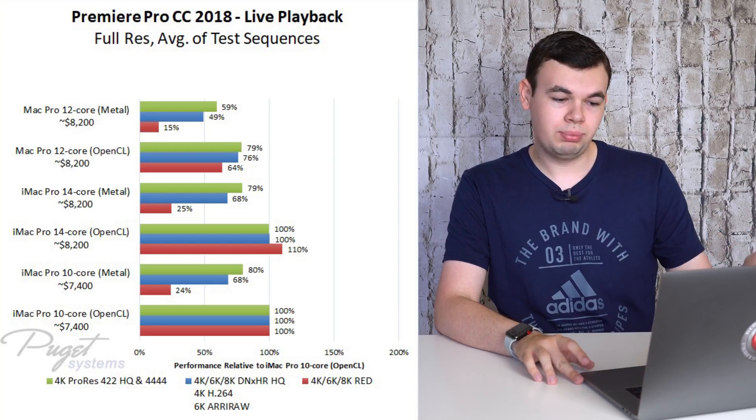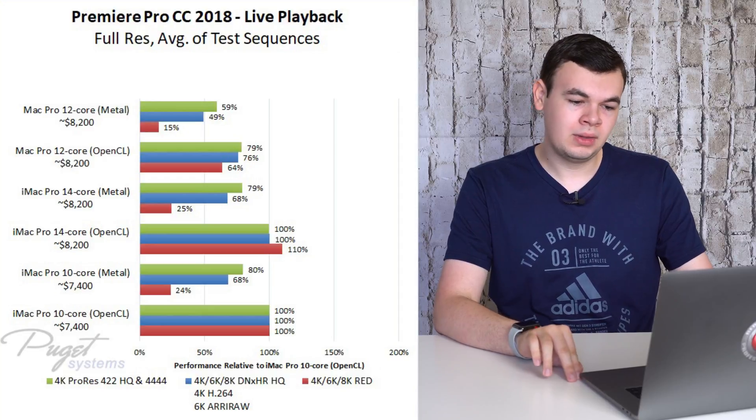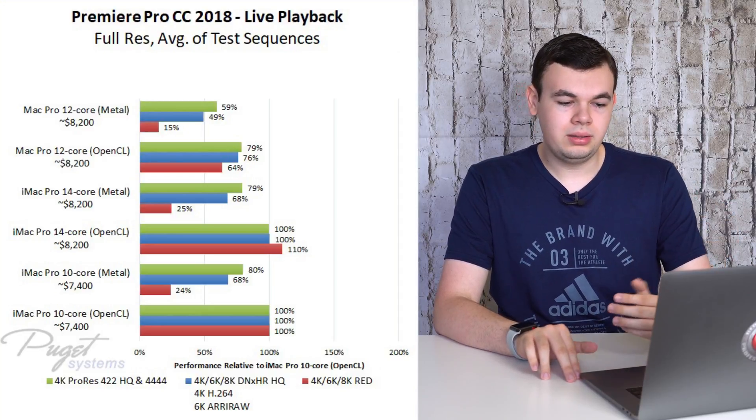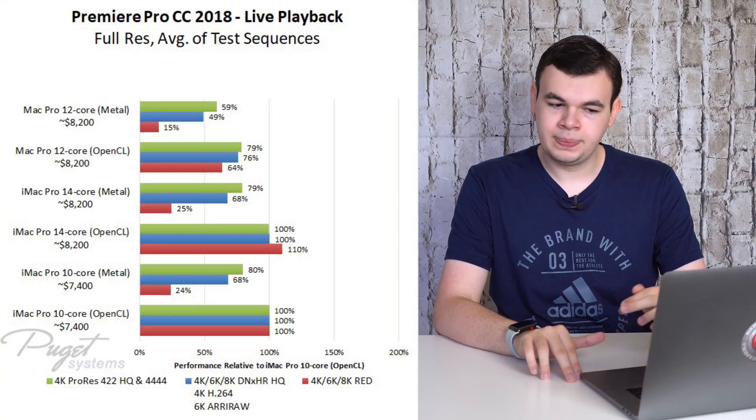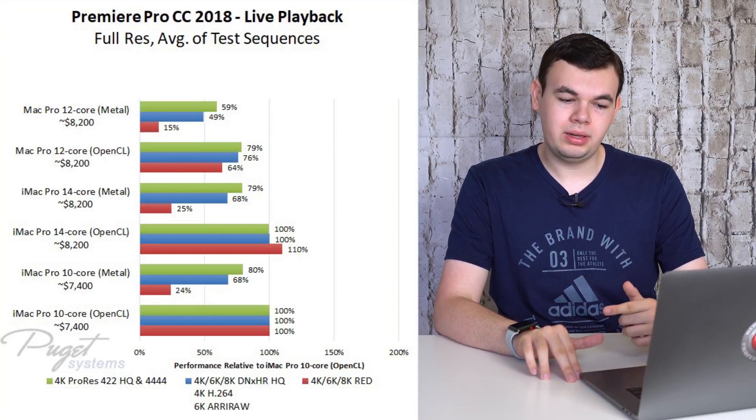In the graph, in green we have 4K ProRes 422HQ and 4444. In blue we have DNxHR, HQ, H.264, and 6K R3D RAW. In red we have 4K, 6K, and 8K RED footage. The green is the best optimized, using Apple's own codecs. The blue is more professional but still somewhat optimized. And the red is raw footage — not really specialized or edit-ready at all.